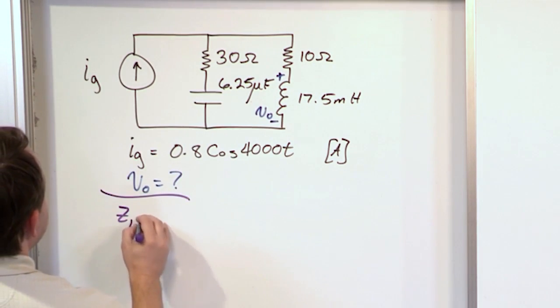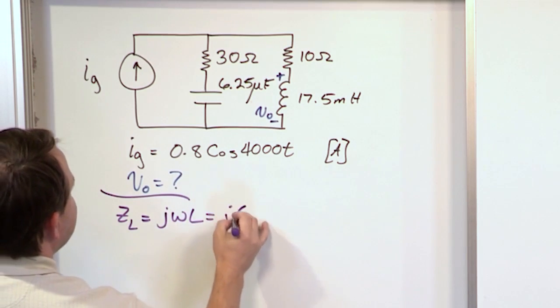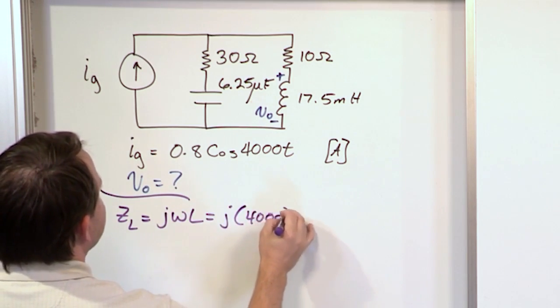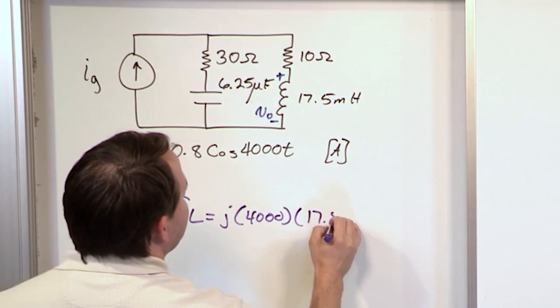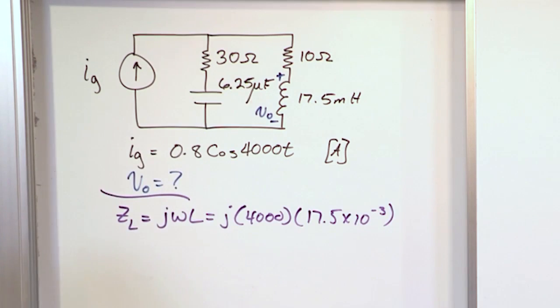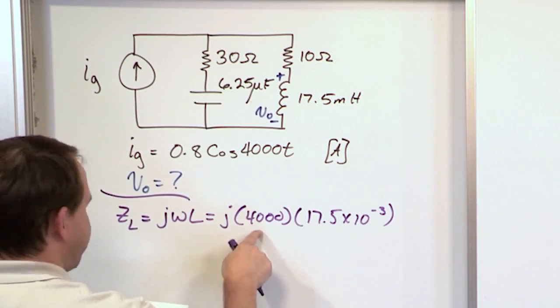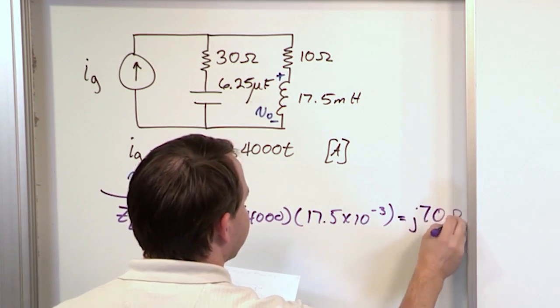So, the impedance of the inductor, which is this guy, is j omega L, which is j times 4000, because the frequency is 4000, times L, which is 17.5 times 10 to the minus 3, which is millihenries. And when I multiply this guy by this, and I have the j out front, I get j70 ohms.